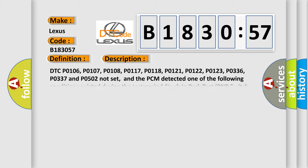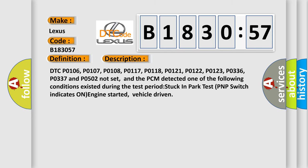And now this is a short description of this DTC code. DTC P0106, P0107, P0108, P0117, P0118, P0121, P0122, and P0123 not set.